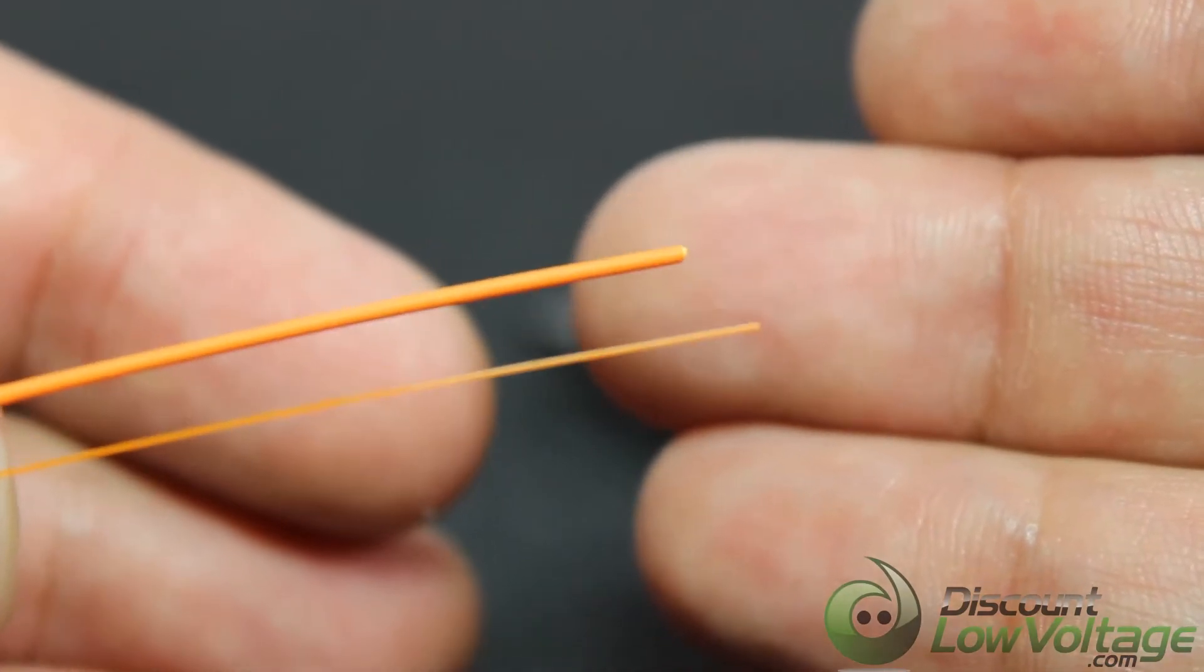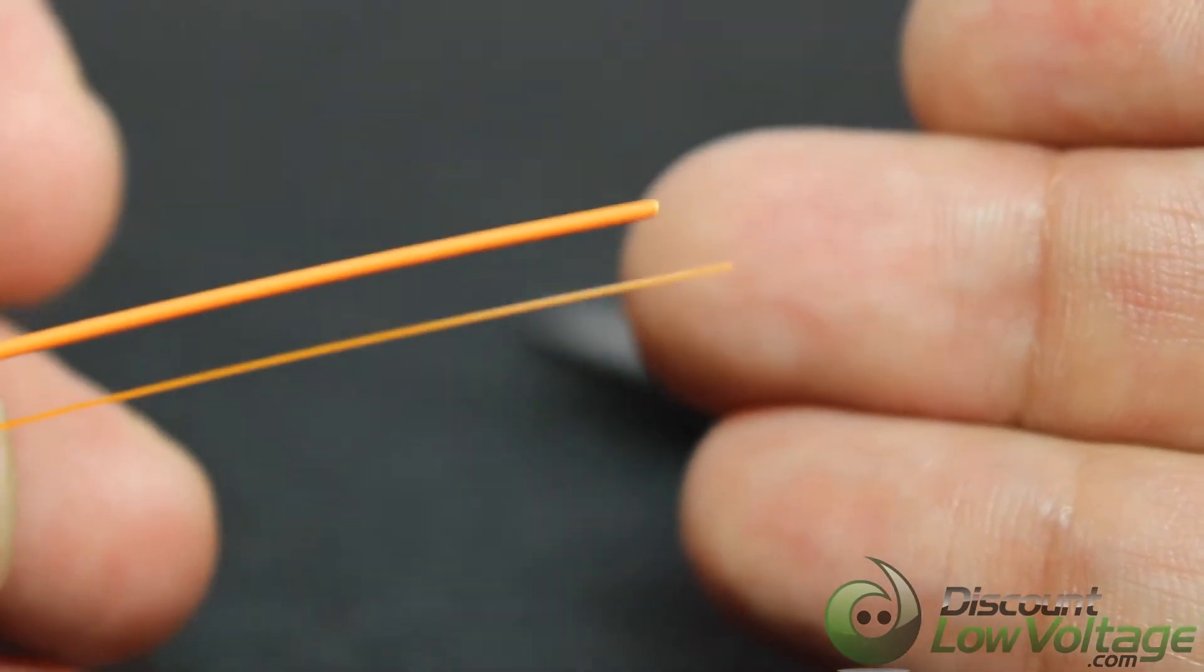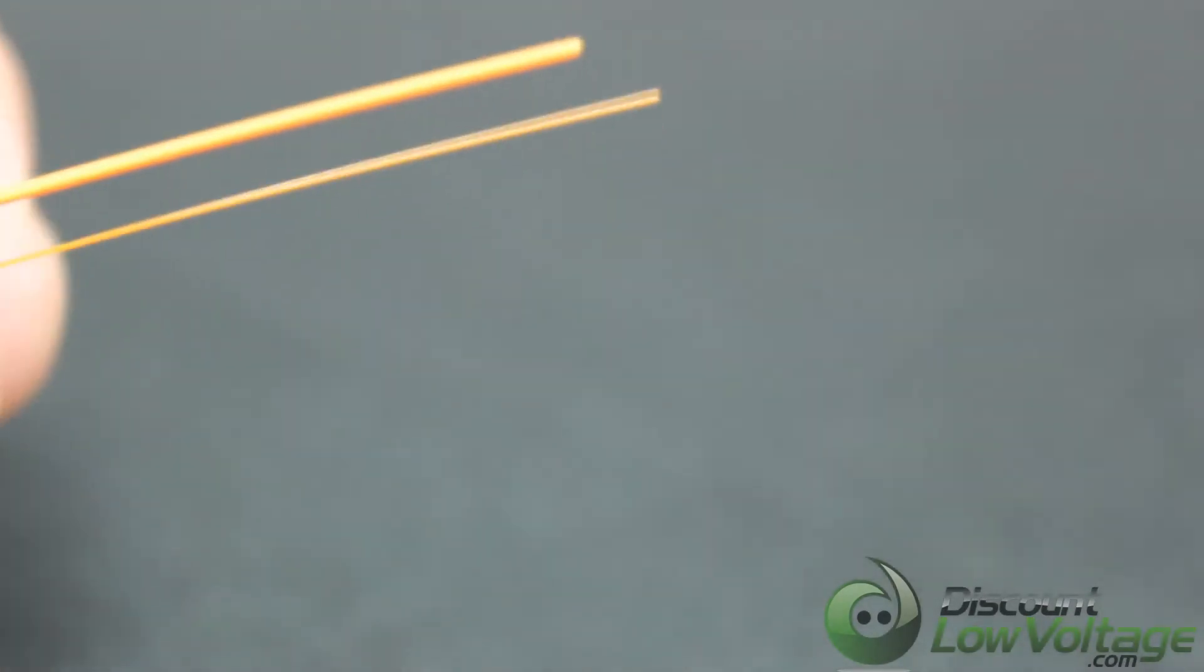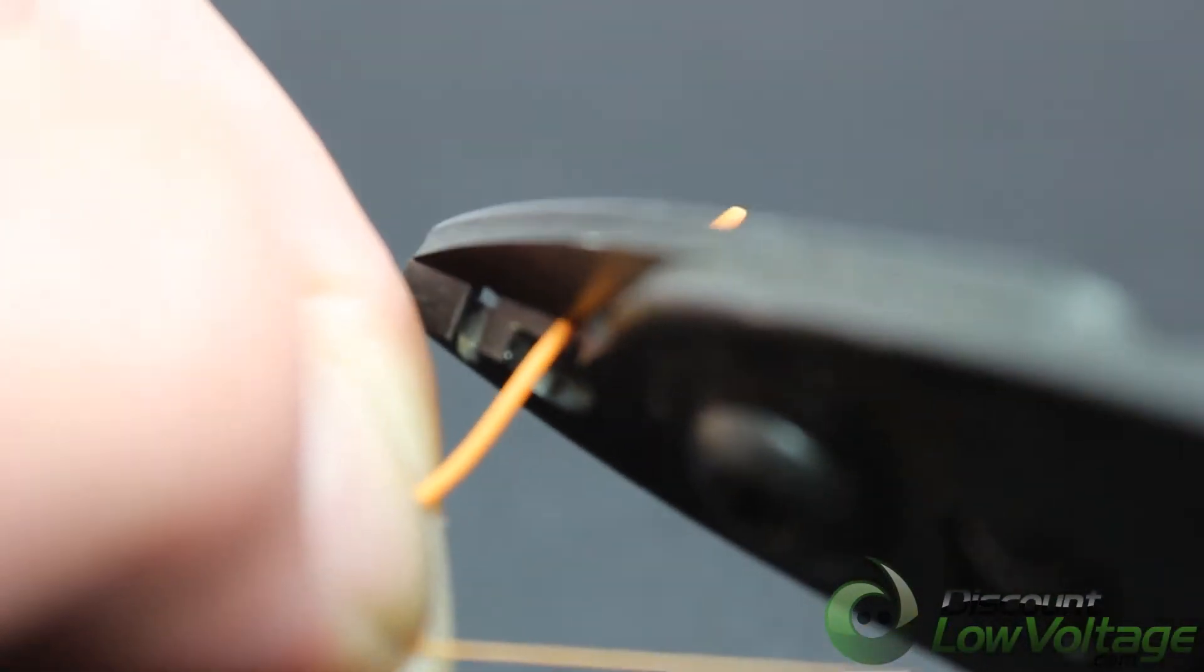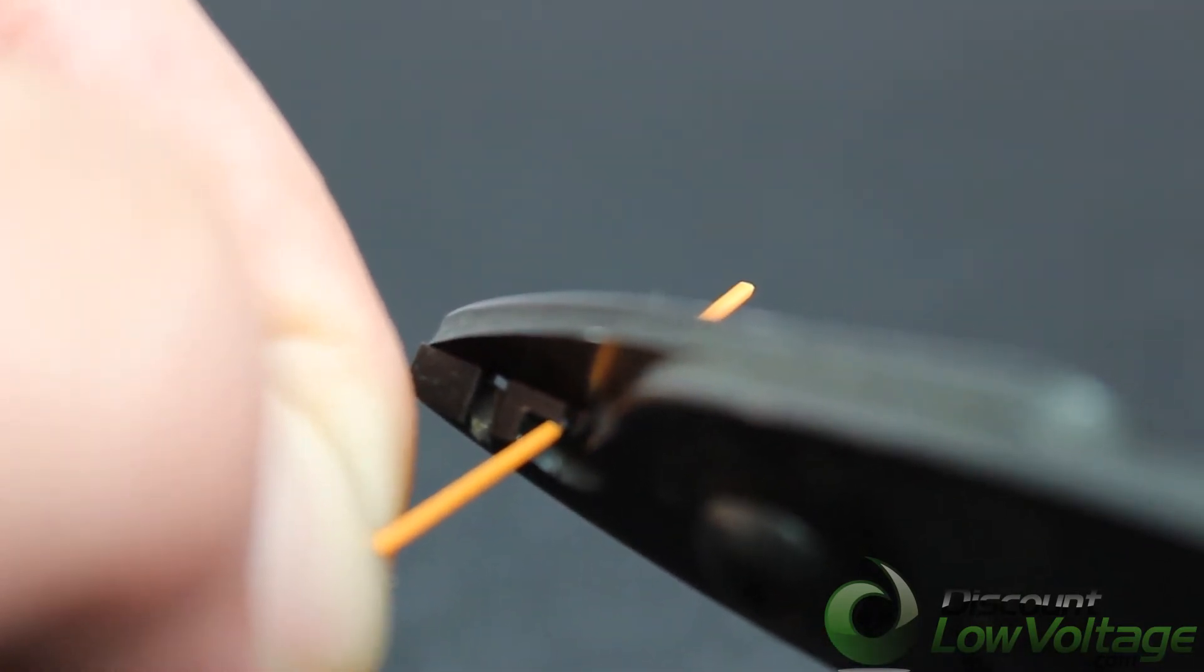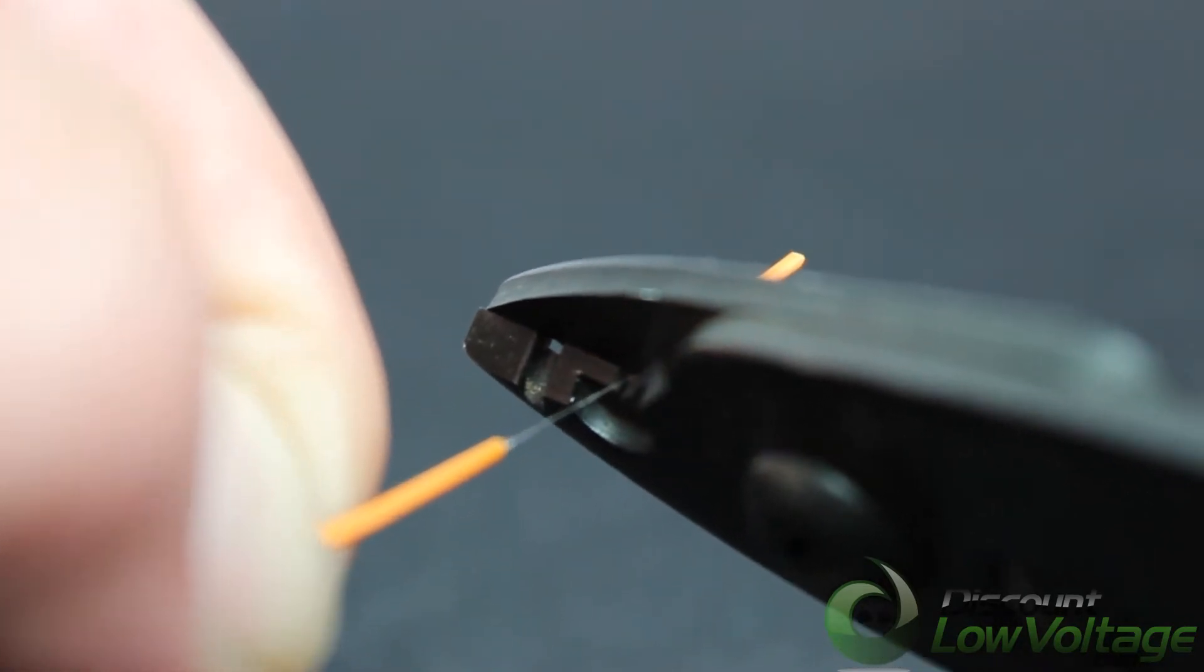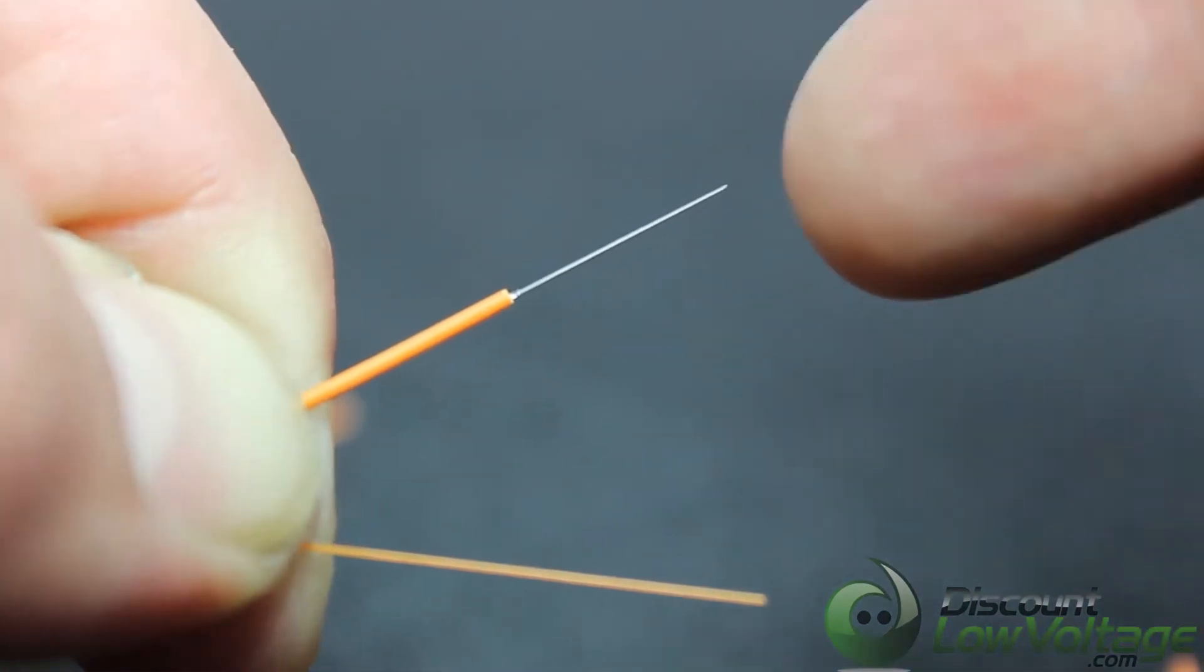The cladding underneath is going to be the same 125, but you have your 250 and your 900. Let me see if I can strip a piece off for you. Here we go. So the cladding underneath is the 125.